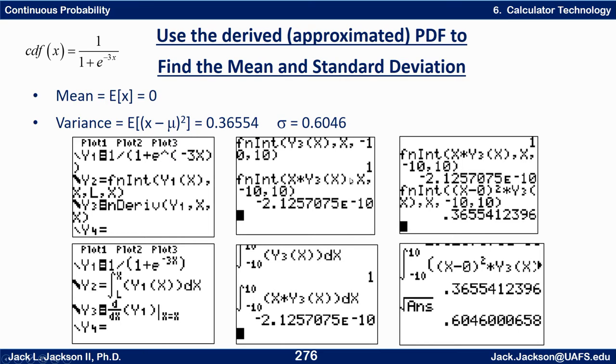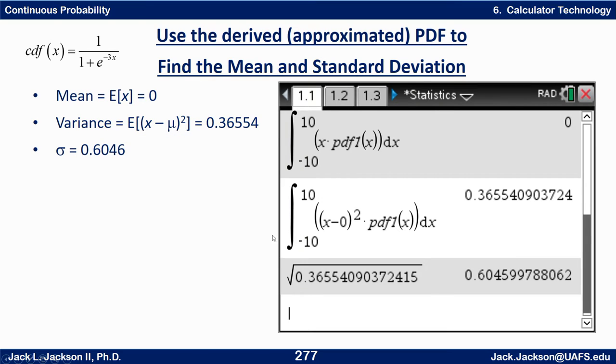Looks like this in the older operating system. On the Inspire it looks something like this. Same thing I've got my PDF stored as PDF1. So I do X times PDF1 of X dX going from negative 10 to 10. That's zero. Works out exactly zero on this calculator. Then I do X minus zero squared times the PDF of X and there's the variance approximately. Square root of my answer gives me the standard deviation.